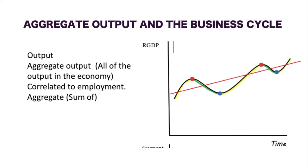Aggregate output and the business cycle: our output at peaks is going to be very high. If we're looking at a PPC, it would be a point inside the curve close to our PPC curve. Aggregate output is all the output added together, as represented in this graph. Aggregate output is correlated to employment — if we have high employment, we're going to have high output. A lot of people are working and producing stuff, so our output or what they produce is going to increase.